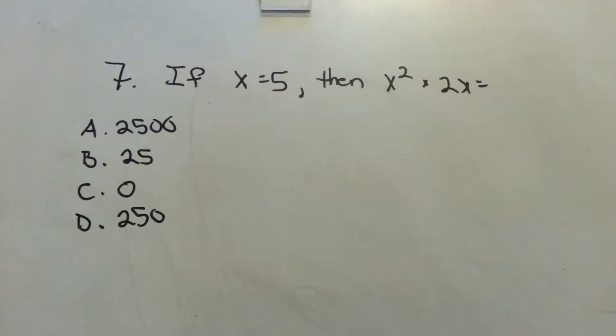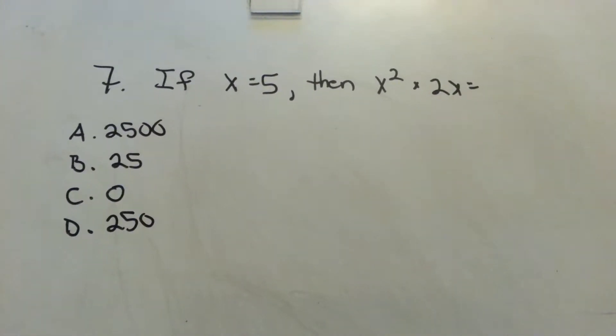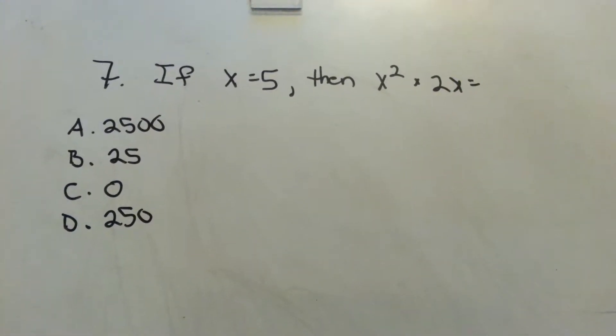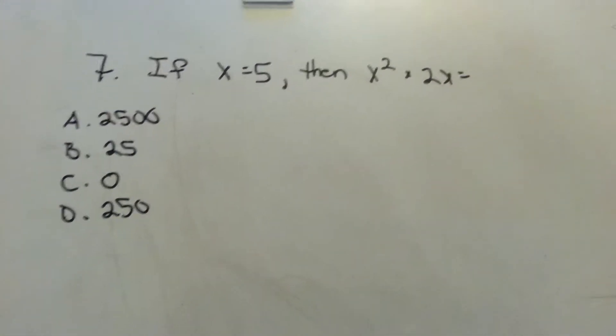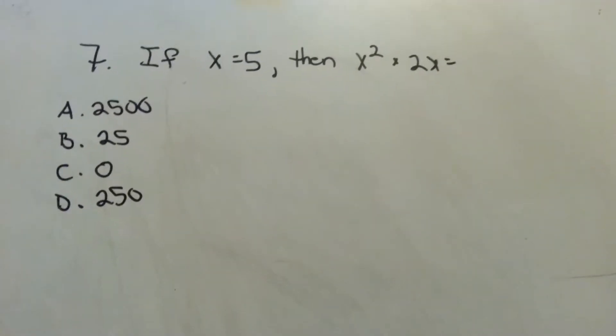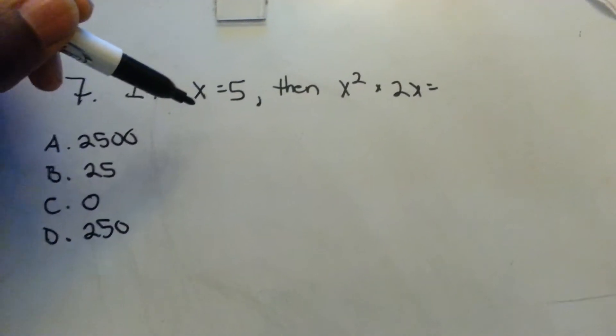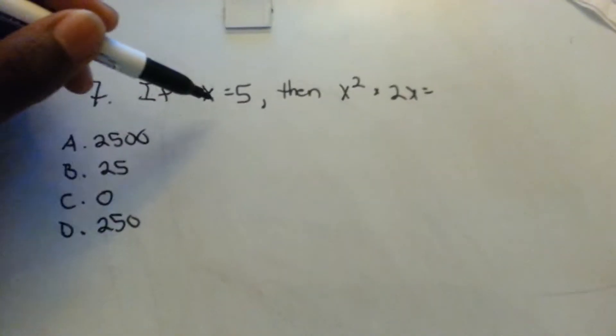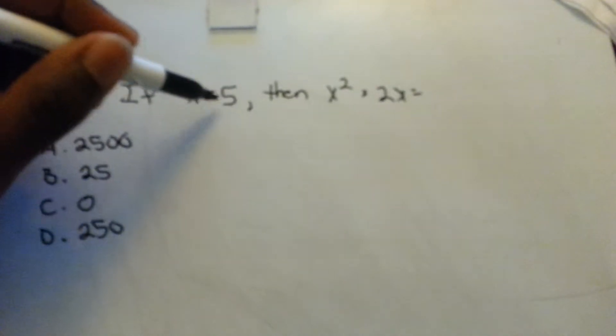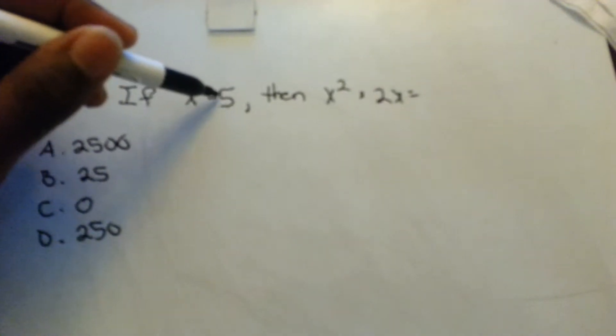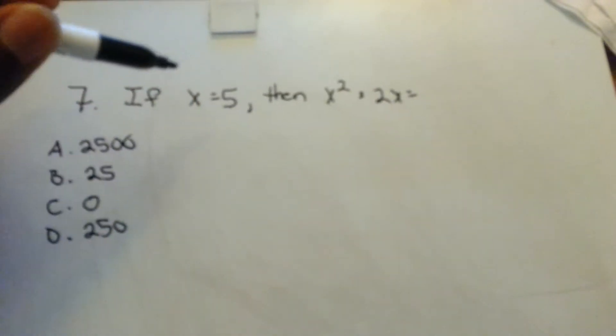If x equals 5, then x squared times 2x equals what? This is just substitution — just going to plug 5 in for wherever there's an x.